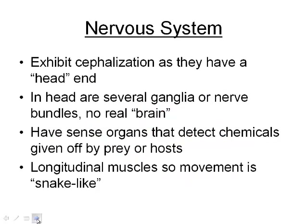Let's look at the nervous system. We still have cephalization at the head — several ganglia or nerve bundles. It's not quite a real brain; it's just nervous tissue centralized at the head. They have sensory organs that can detect chemicals given off by prey or host, similar to the eye spot of flatworms. They do not have an eye spot like the Platyhelminthes, but they can still detect stimulus from prey. They have longitudinal muscles enabling snake-like movement.